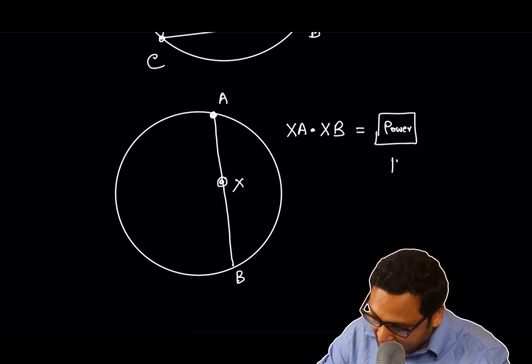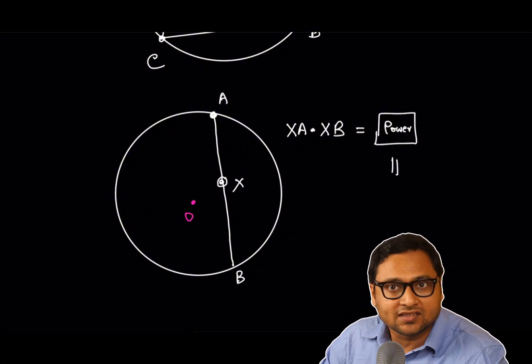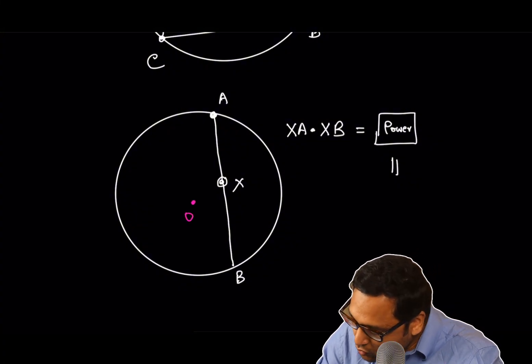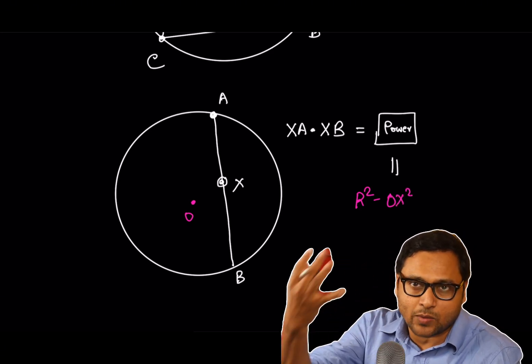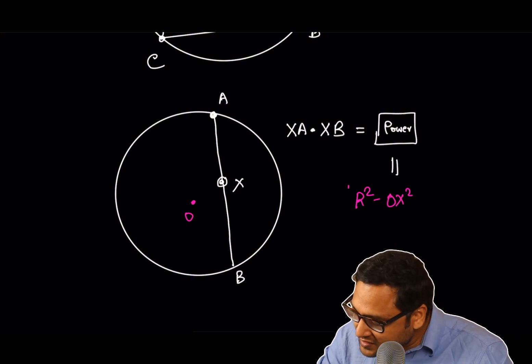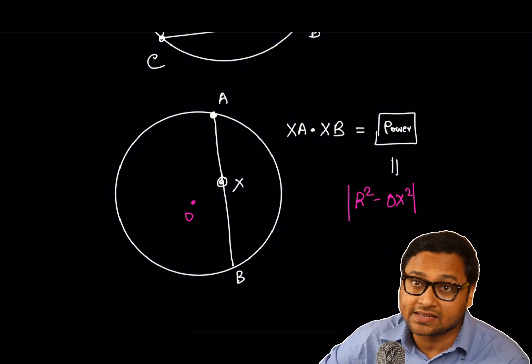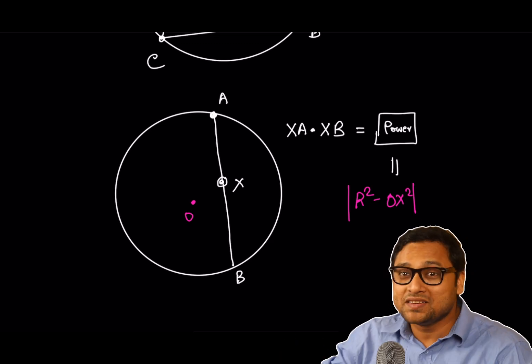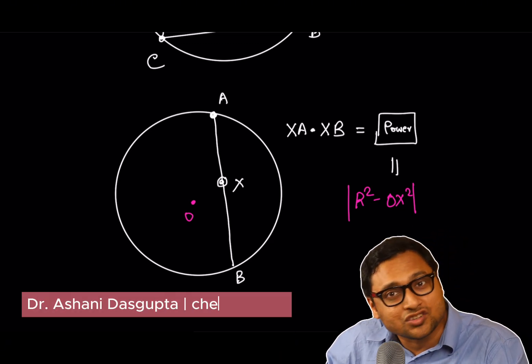There is another way. What you do is, you take the center of the circle. Let's suppose it's O. Then R square minus OX square, the distance of the point from the center square, subtract it from the radius square. This quantity is also known as power of the point X. And both of these things are equal. That's actually a theorem in elementary geometry.